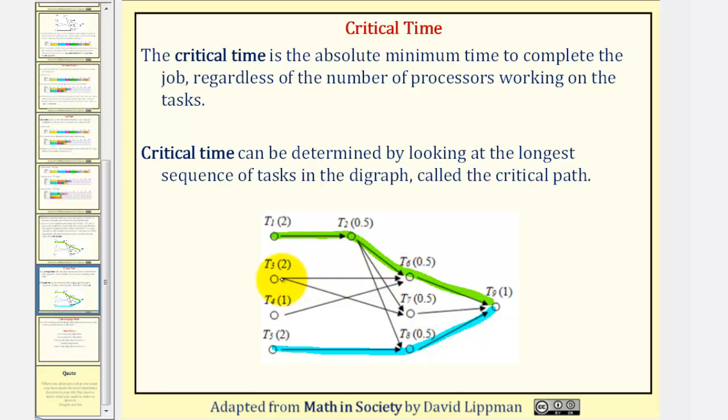There's another example. We could go from task three to task seven to task nine. Notice this path takes two plus 0.5 plus one, or 3.5 days. So still the longest path is four days, our critical time.